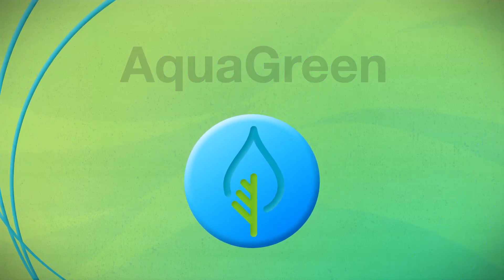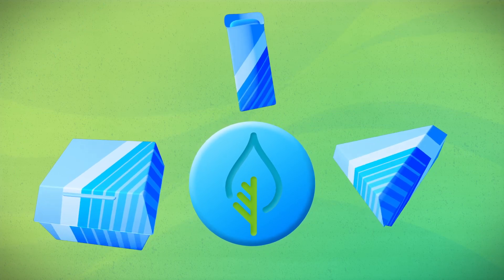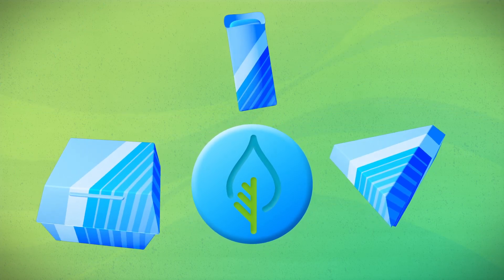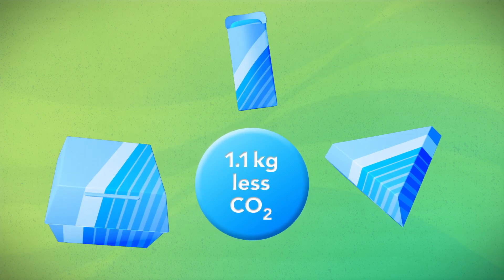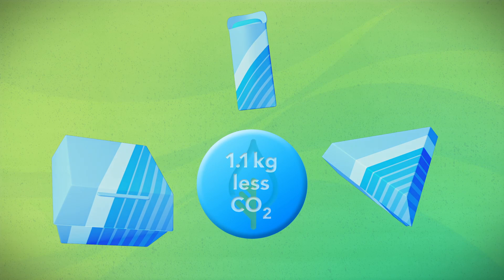For a range of packaging applications, it's a small change that has a big effect. Sun Visto Aqua Green produces approximately 1.1 kg less CO2 per kg of ink used compared to conventional water-based inks.